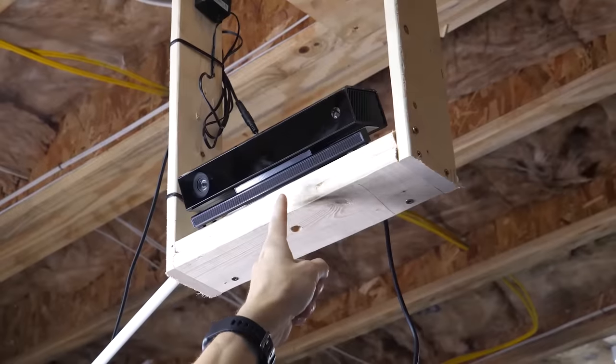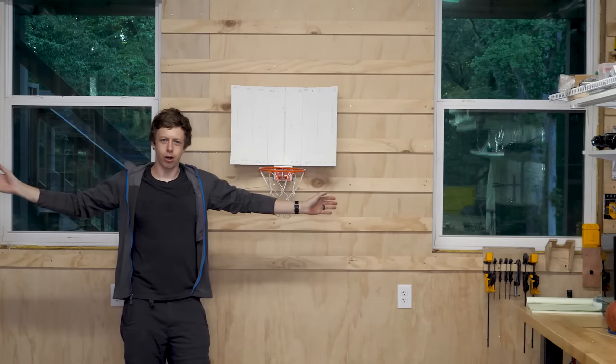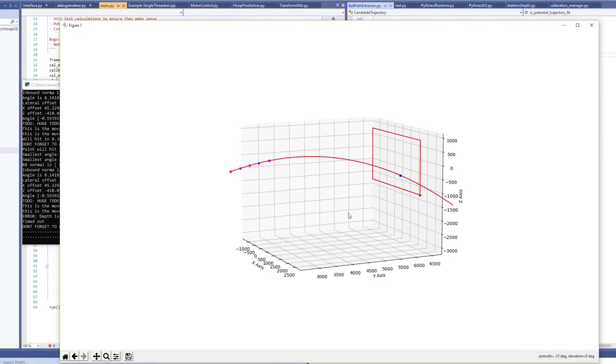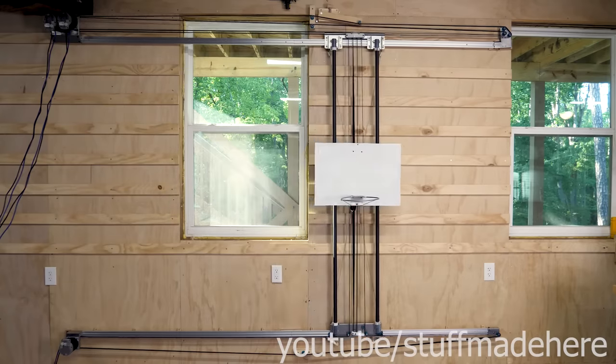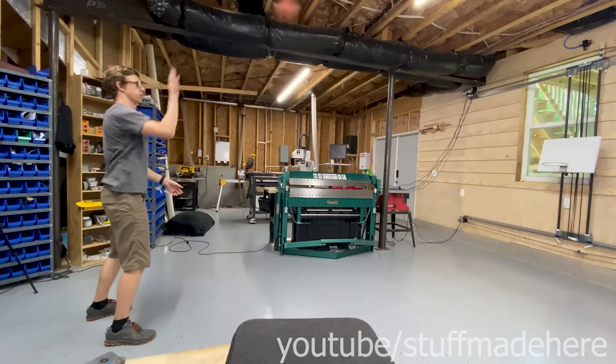Alright, here's my game plan. I'm going to point this Kinect, which is a 3D sensing camera, at this giant wall. I'm going to write software that will track whenever I throw a ball, and it will figure out where the ball is going to hit on the wall. I'm going to build a basketball hoop that I can move wherever the ball is going to go. And it's going to do all of that between the time the ball leaves my hand and strikes the wall.